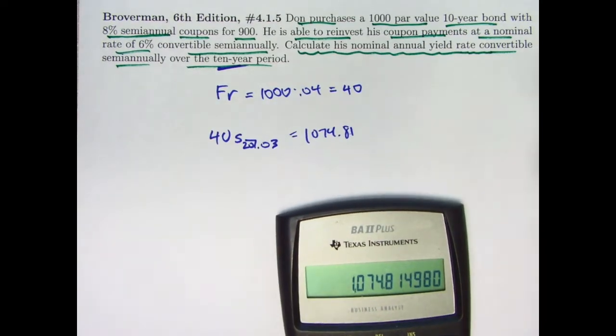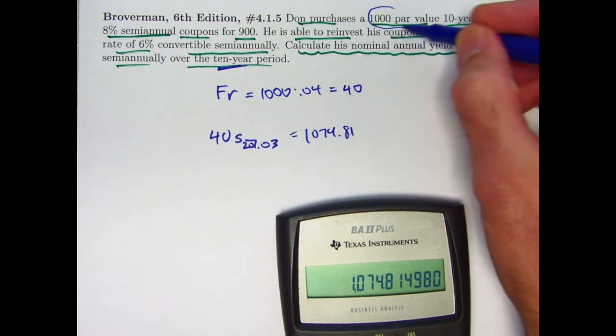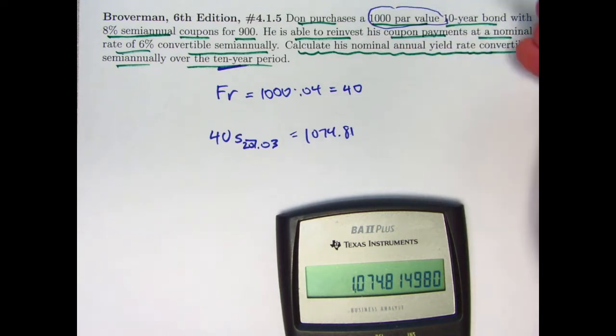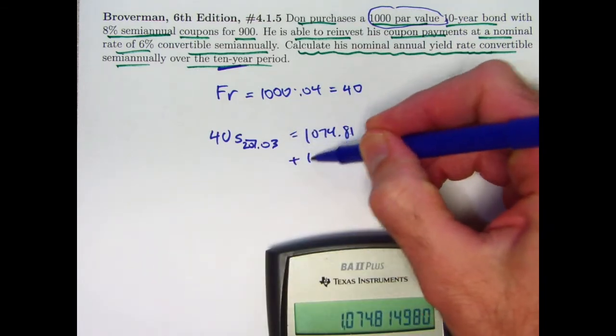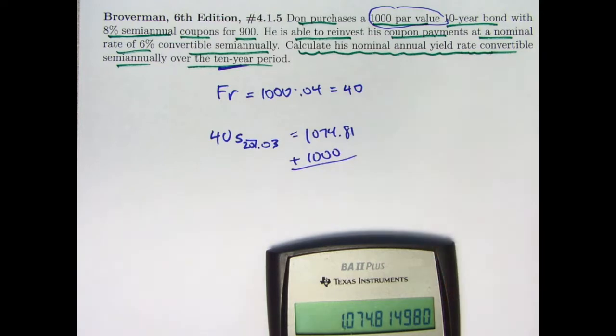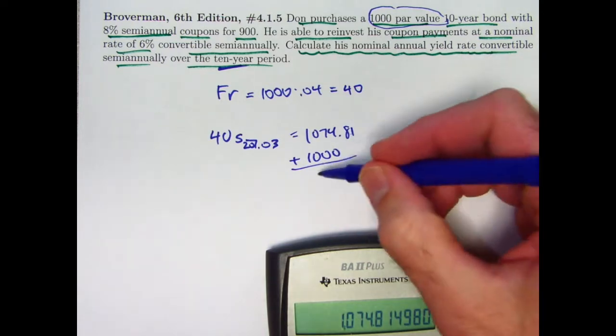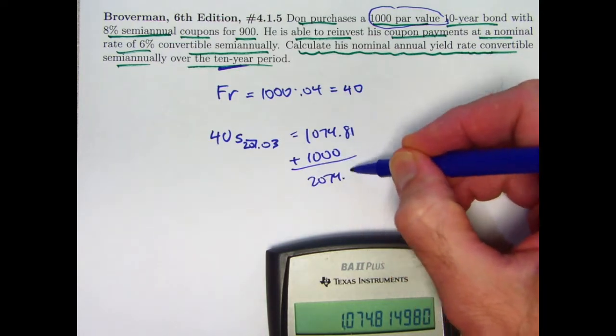That's not the final amount that your original 900 grows to. You also get your original, the face value or par value back. Again, the redemption amount here is assumed to be the same as the face or par value, unless stated otherwise. So your final amount that you have after 10 years is 2074.81.